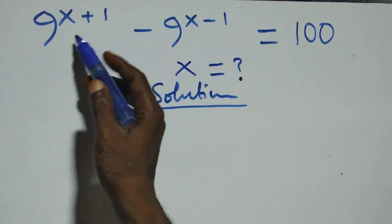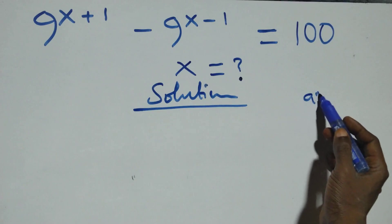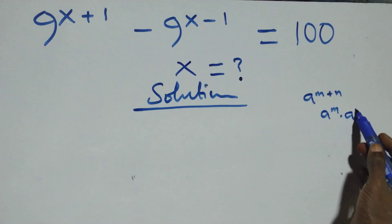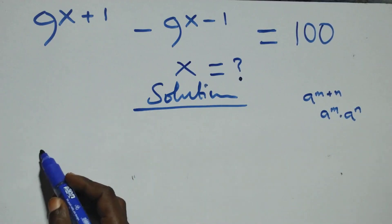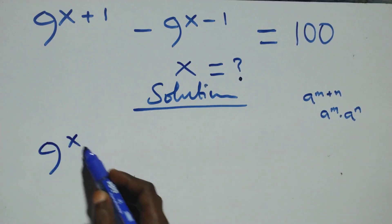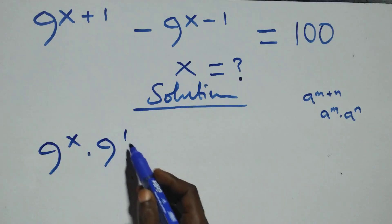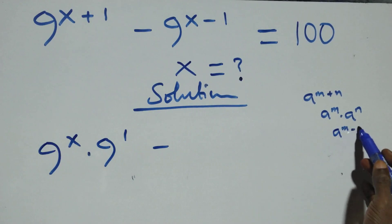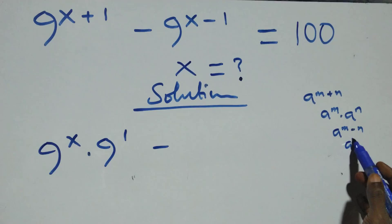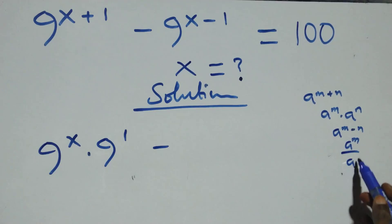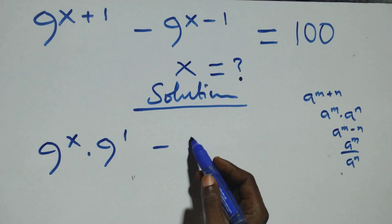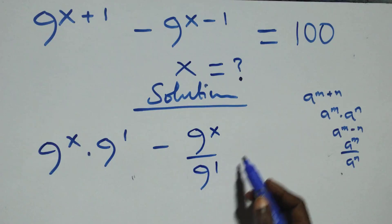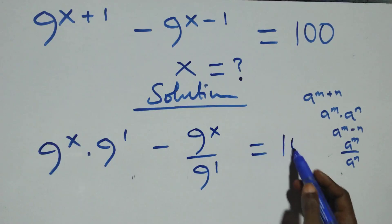On what we have here, this follows when we have a raised to power n plus n — this is the same thing as a raised to power n times a raised to power n. At this here, we can express this as 9 raised to power x times 9 raised to power 1. Also, this follows when we have a raised to power n minus n — this is the same thing as a raised to power n over a raised to power n.